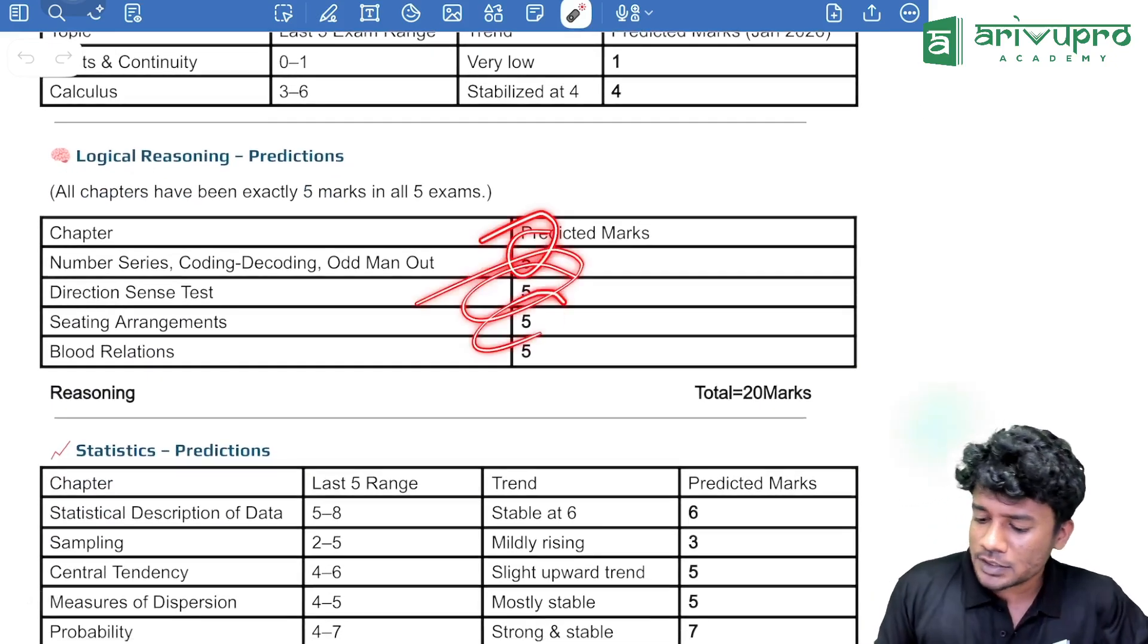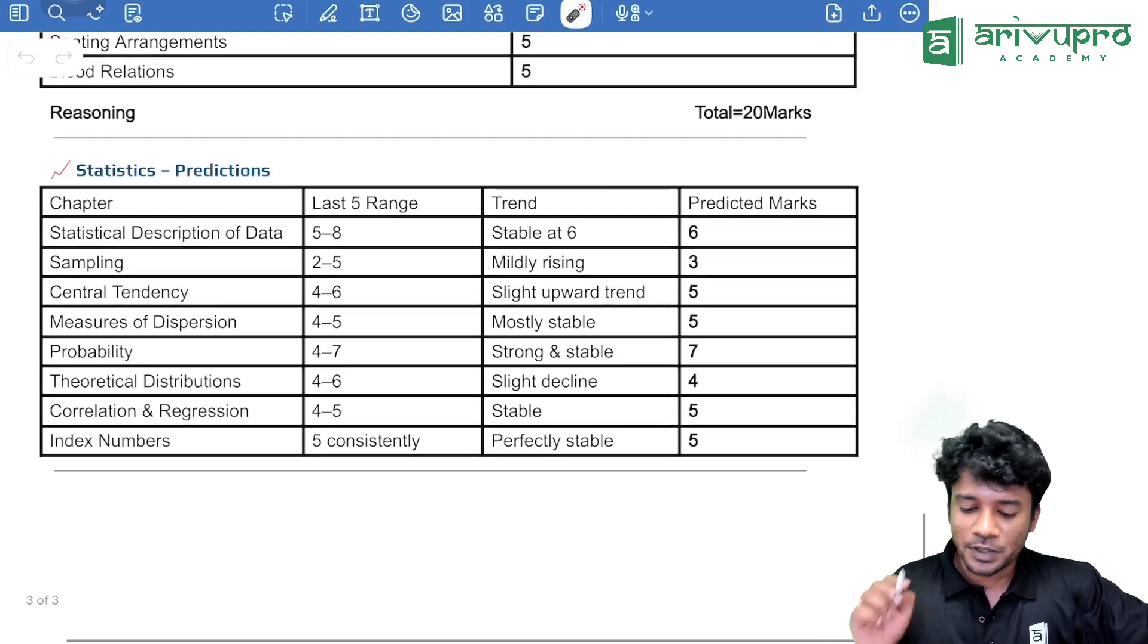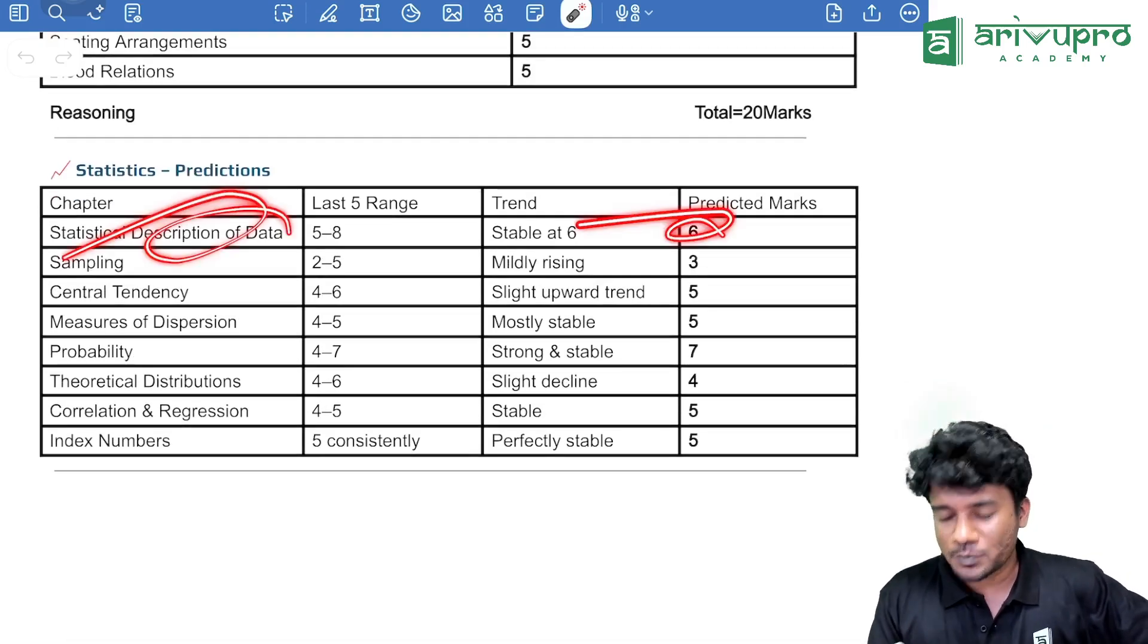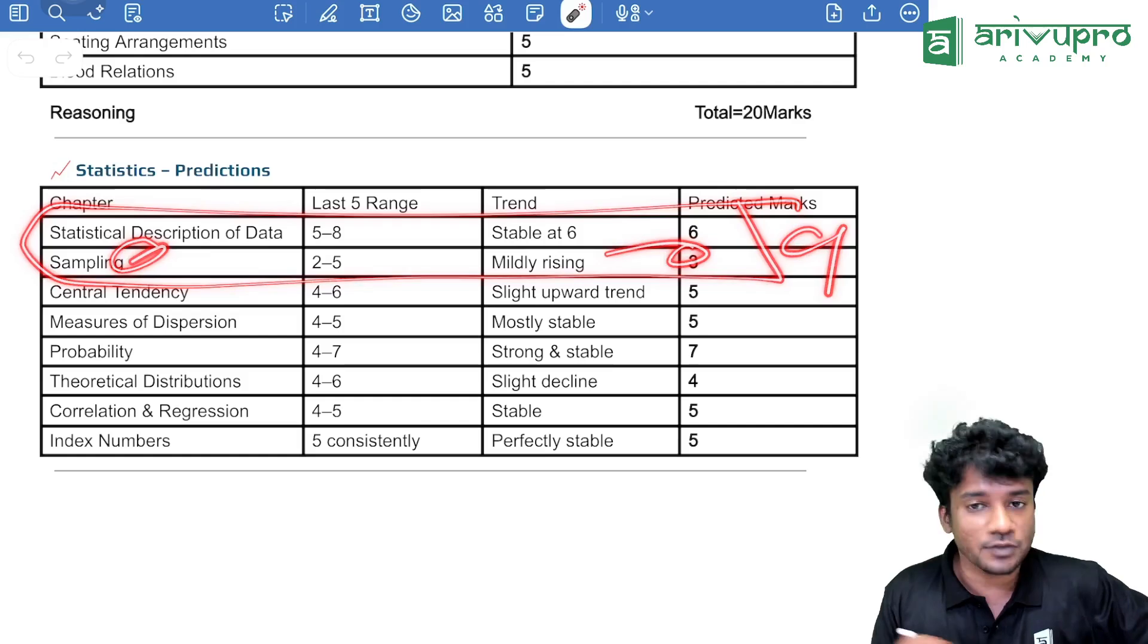Logical reasoning, it is usual. Per chapter, we are expecting 5 marks down. And coming to the statistics part, description of data, we are expecting 5. And sampling, we are expecting 3. That means, in total, we are expecting 9 marks from chapter 13.